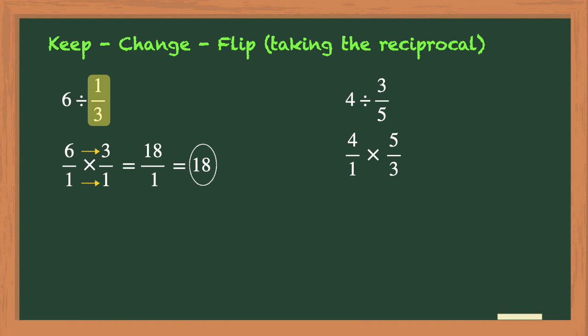So now you're ready to multiply. Let's start by multiplying the numerators. 4 times 5 is 20. And then the denominators. 1 times 3 is 3. Looking at the fraction here, you know that it needs to be simplified because it is an improper fraction.